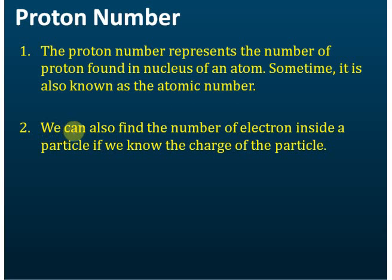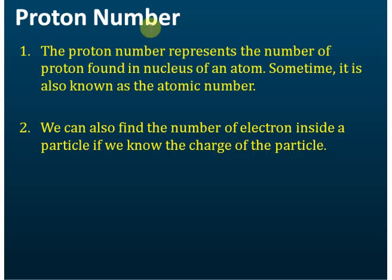We can find the number of electrons inside a particle if we know the charge of the particle and the proton number. If we know the proton number and the charge, we can find the number of electrons.